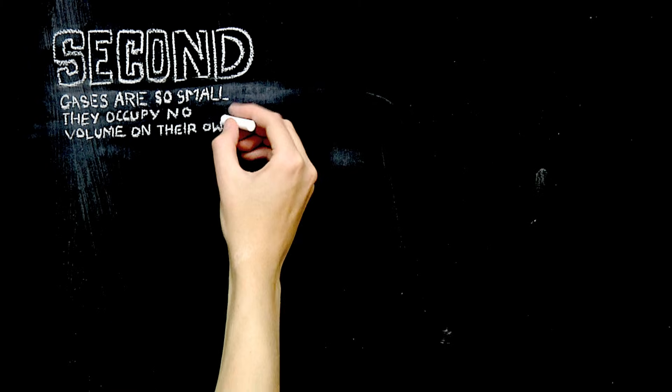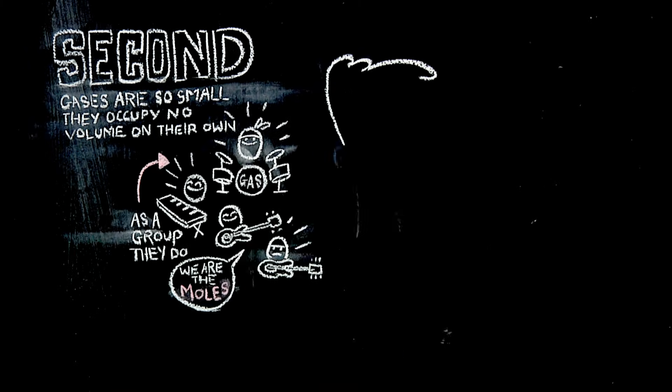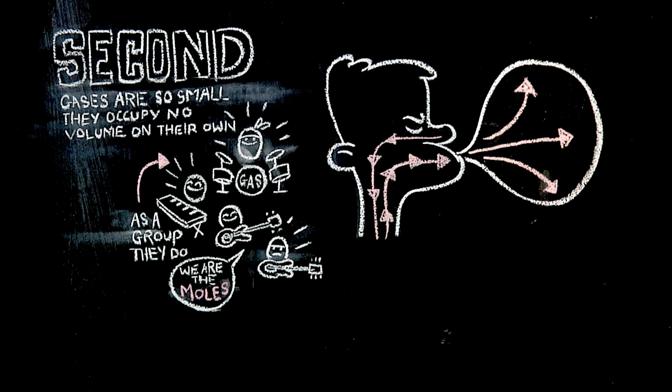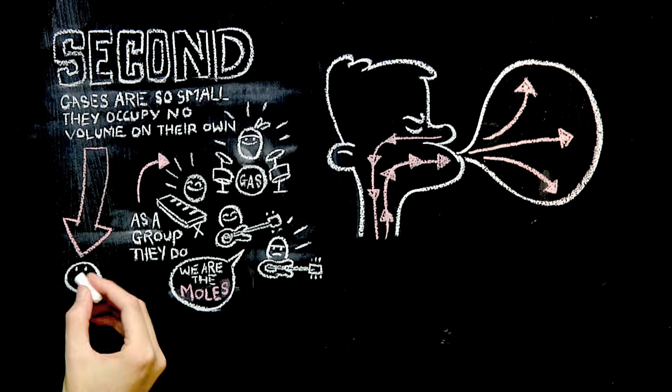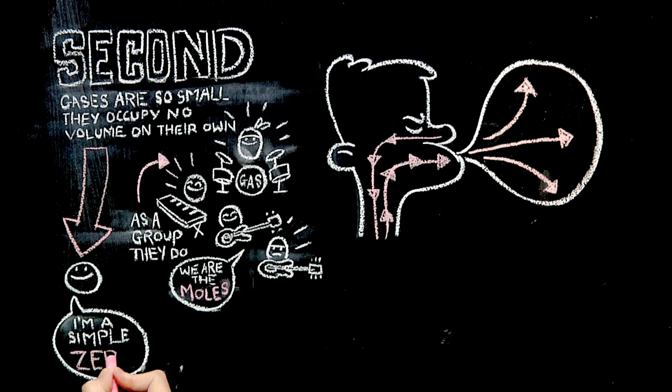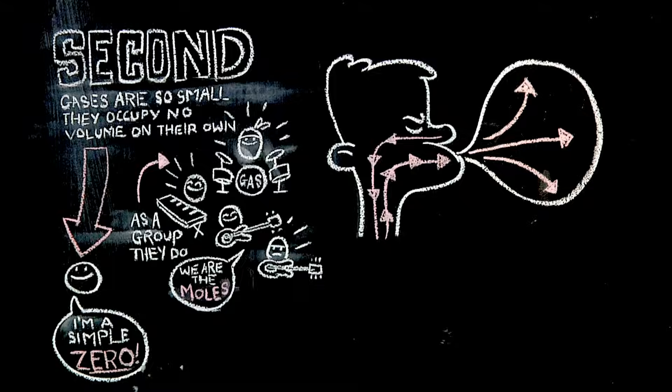Second, gases are so small, they occupy no volume on their own. As a group they do - blow up any balloon and you can see how that volume changes. But single gases have no volume compared to other forms of matter. Rather than calculating such a small amount of matter, we just call it zero for simplicity.